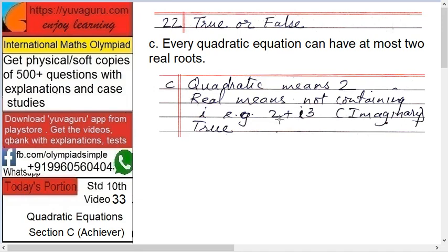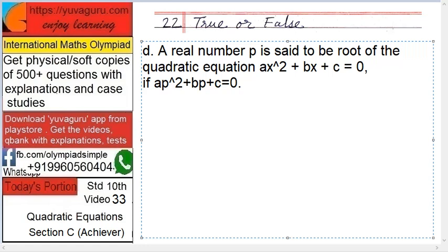Next. Every quadratic equation can have at most two real roots. That's true. Why? Because quadratic means 2. And real means not containing the imaginary number i. How are imaginary numbers shown? 2 plus i3, that is an imaginary number. These imaginary numbers cannot be shown on the number line, while real numbers can. So this statement is true.